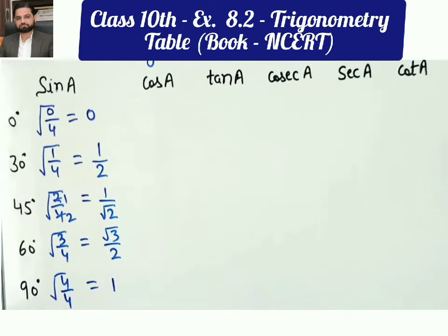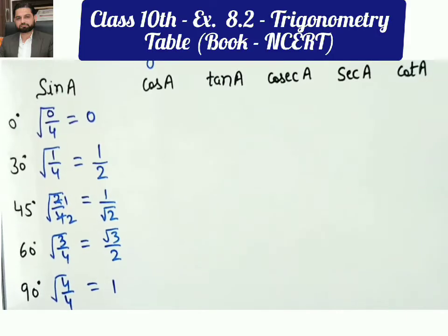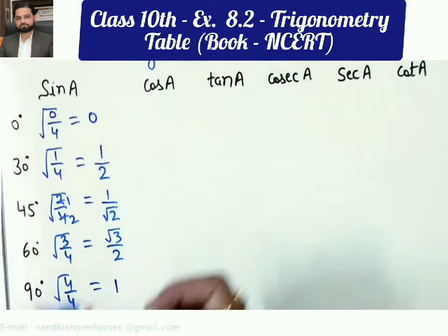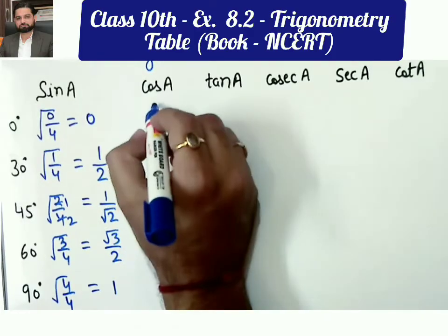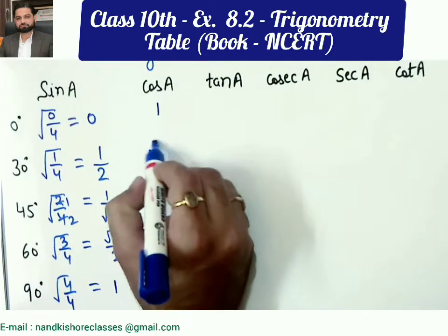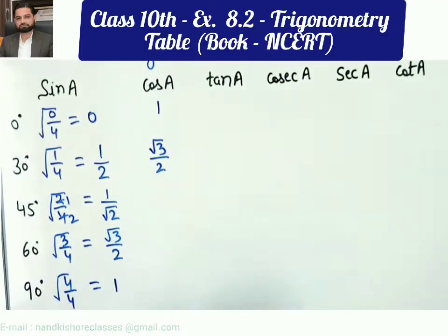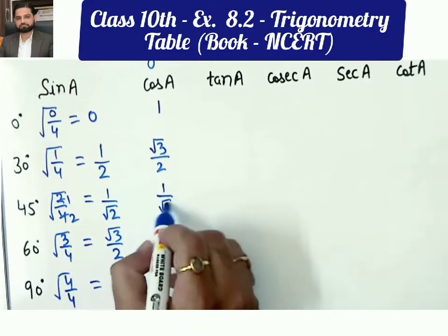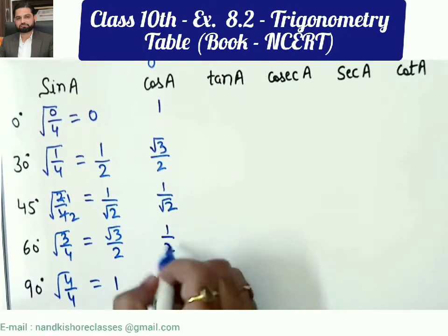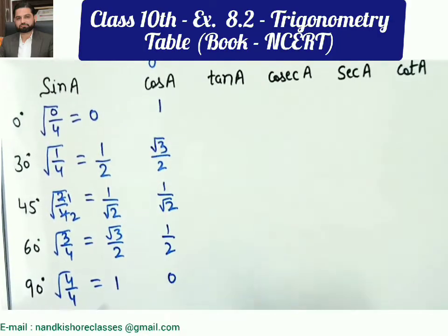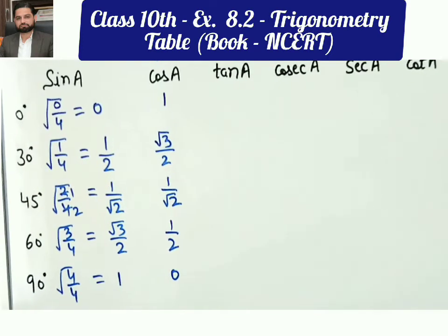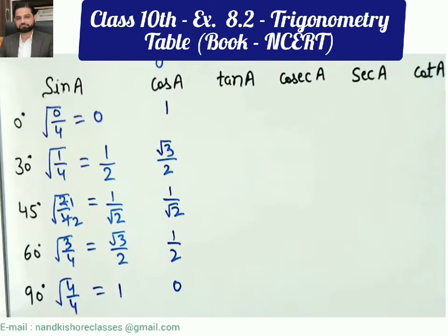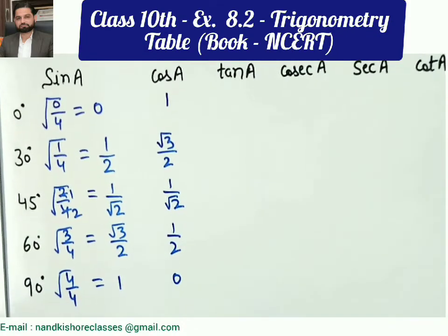Now learning values for cosine has become very easy. For cosine, just look at the sine column and reverse it. Sine at 90° is 1, so cosine starts with 1; then √3/2, 1/√2, 1/2, and 0. So cosine is simply the reverse of the sine column.